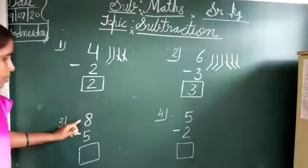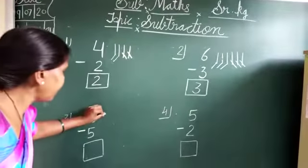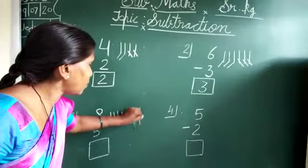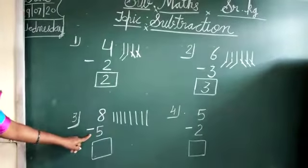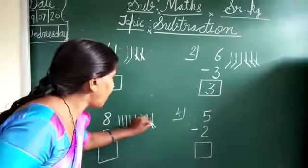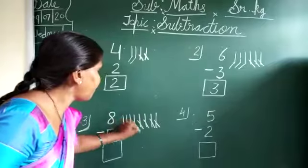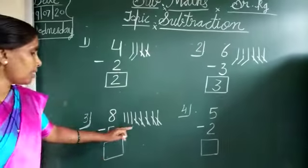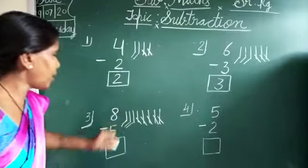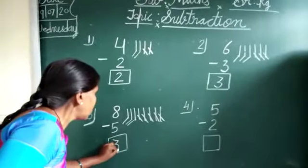Next, this number is 8. I make line 1, 2, 3, 4, 5, 6, 7, 8. Next number is 5. So I will cut 5 lines: 1, 2, 3, 4, 5. So how many lines remain? 1, 2, 3. So the answer is 3.